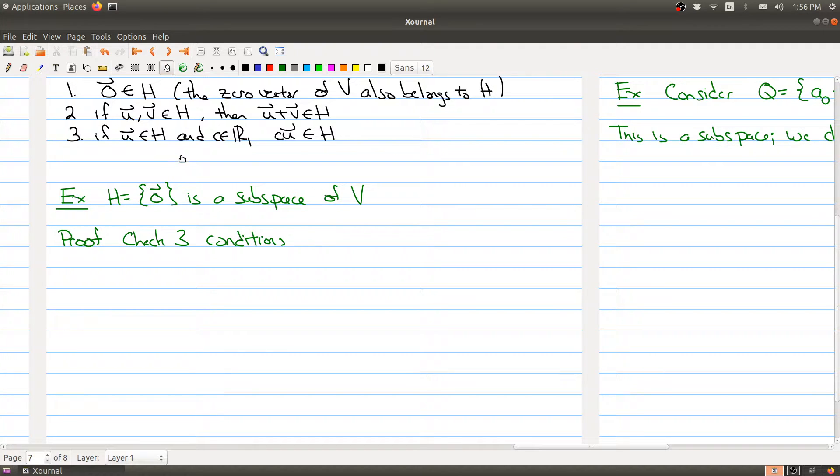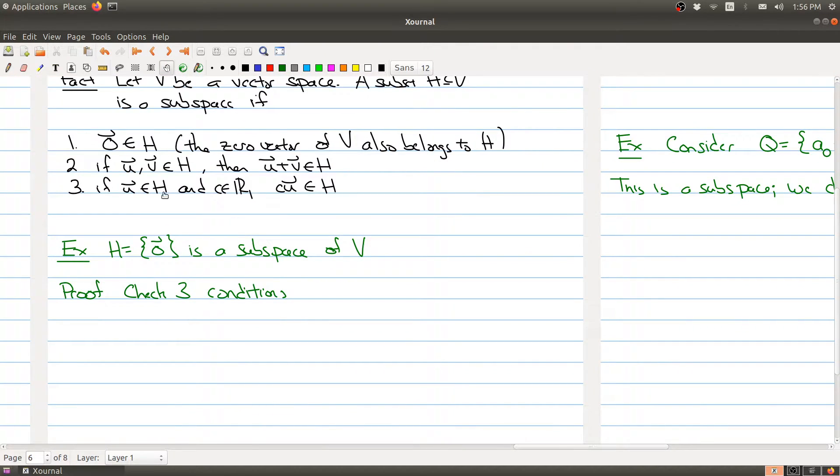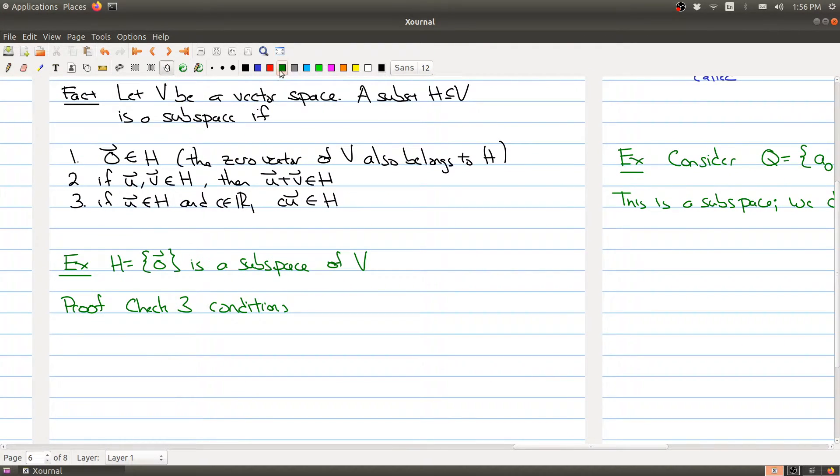And as we just saw before the break, there are three conditions that you need to check. So what I'm going to do is actually check that the three conditions are true. First of all, I have to check whether the zero vector is inside of H, and that's actually clear because the only thing inside of H is the zero vector. So that part is definitely clear.